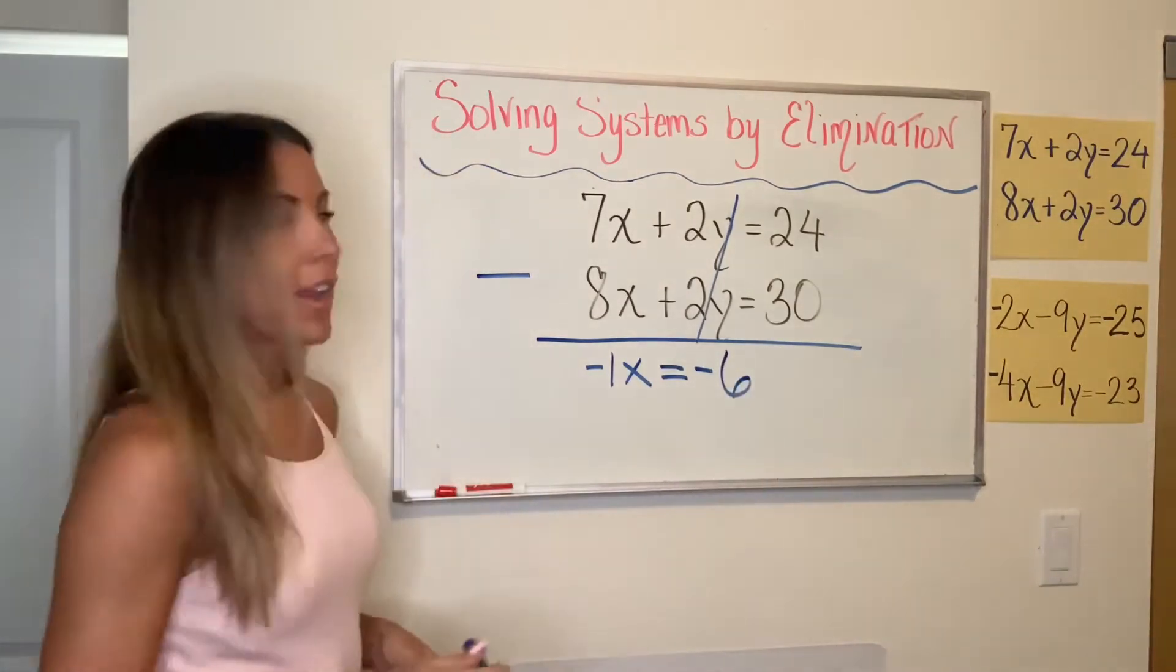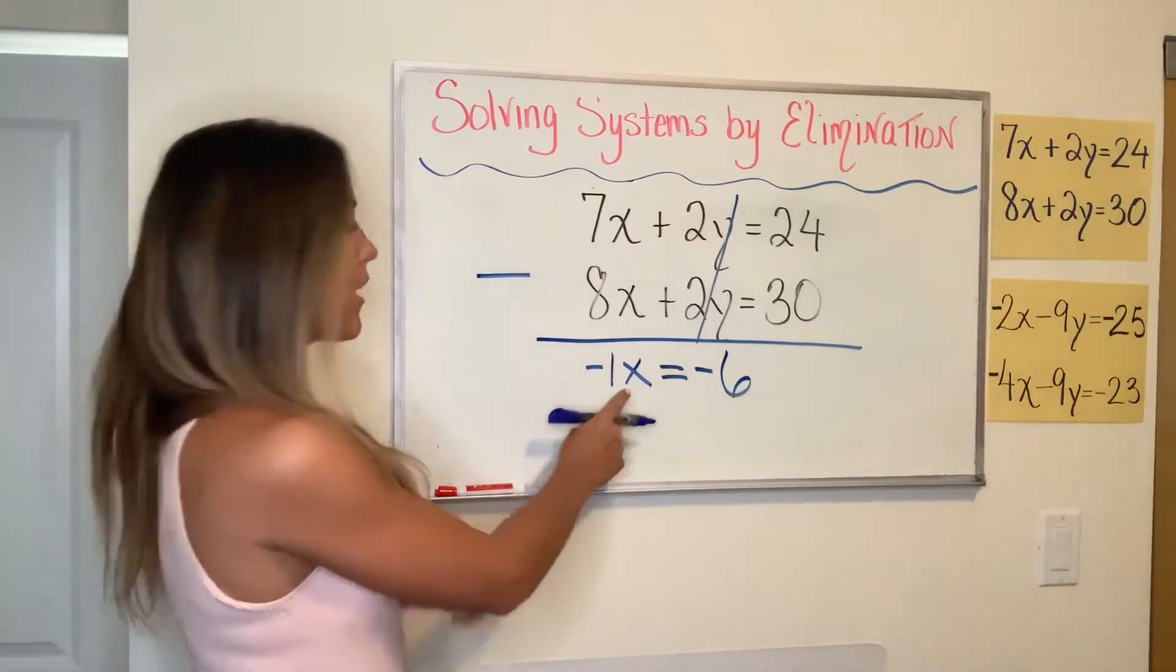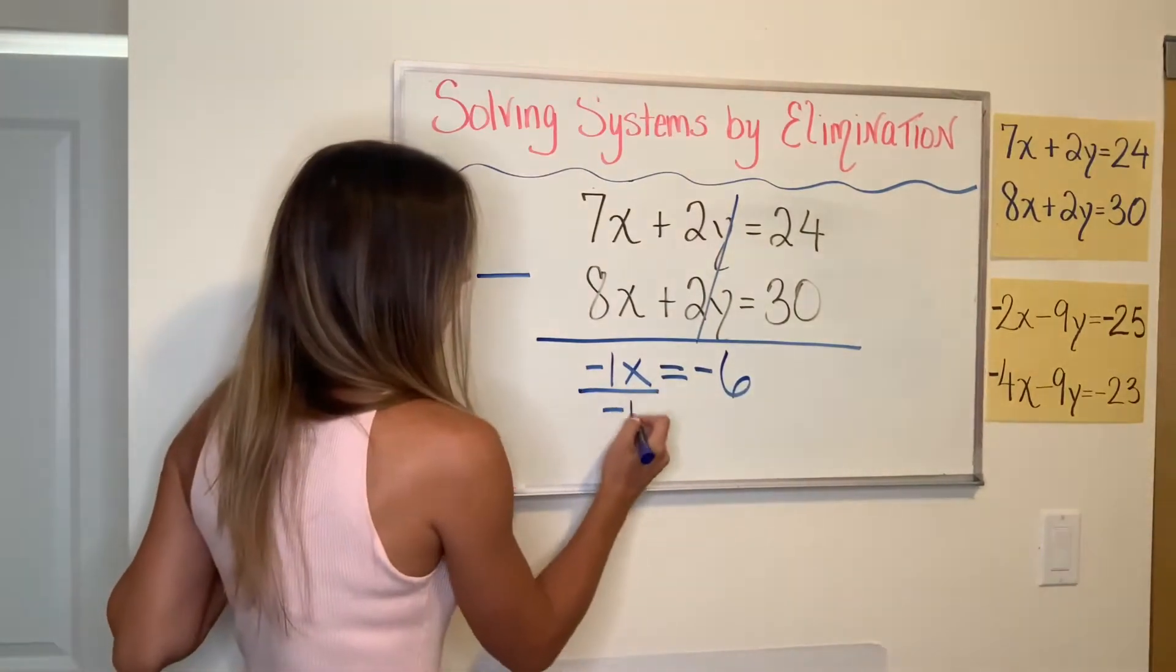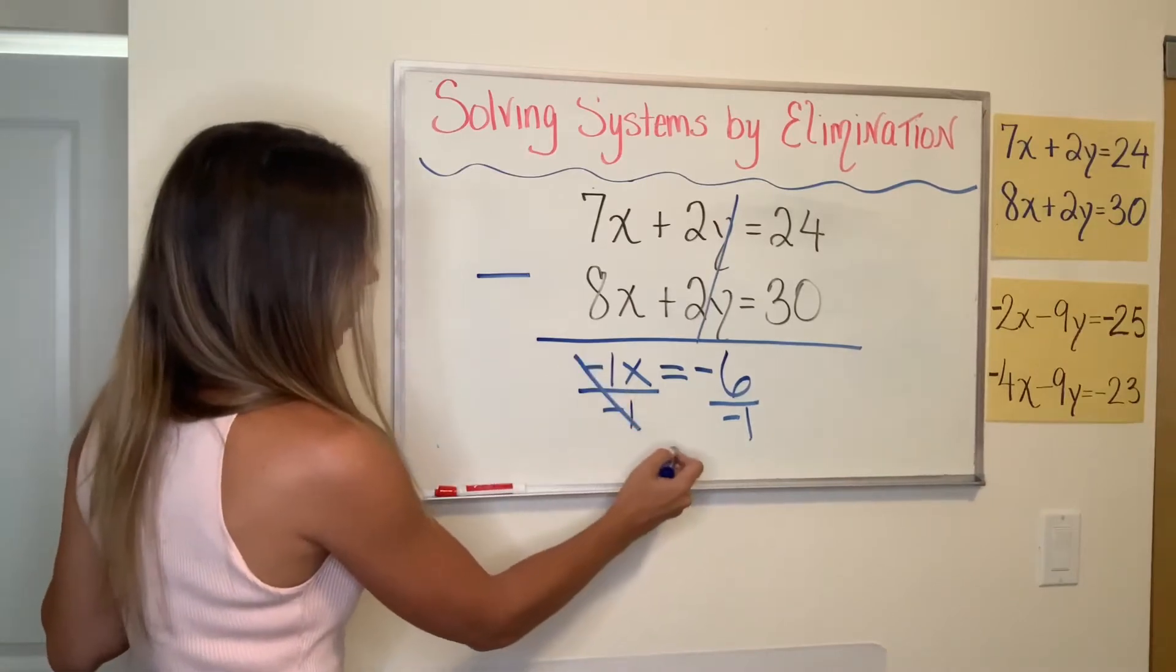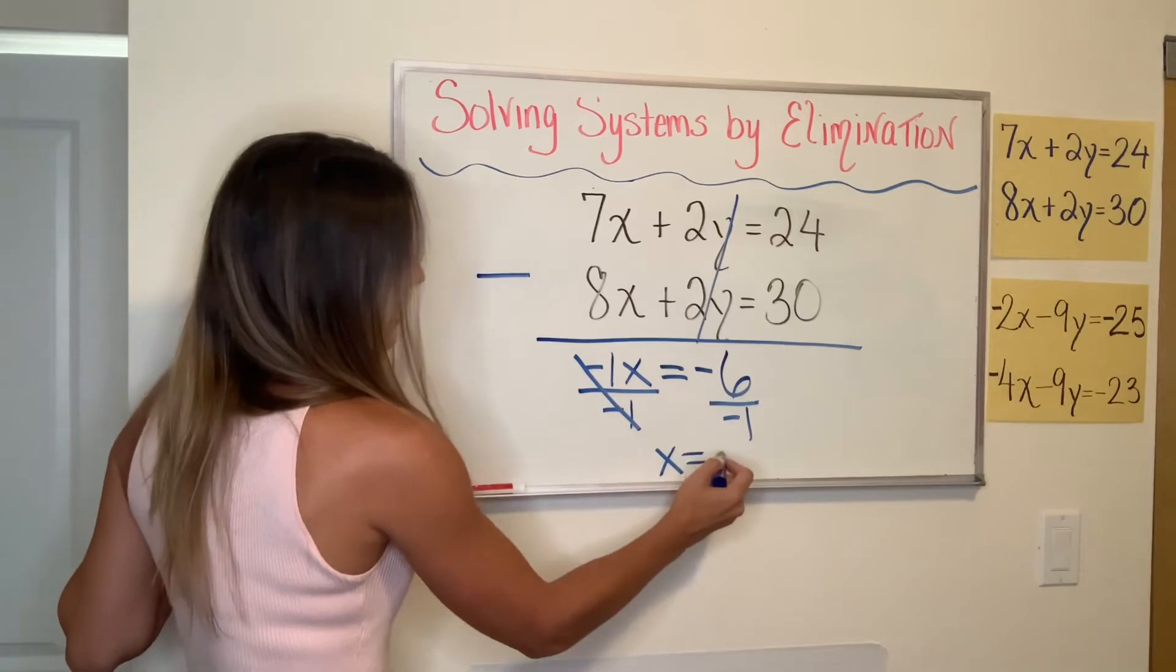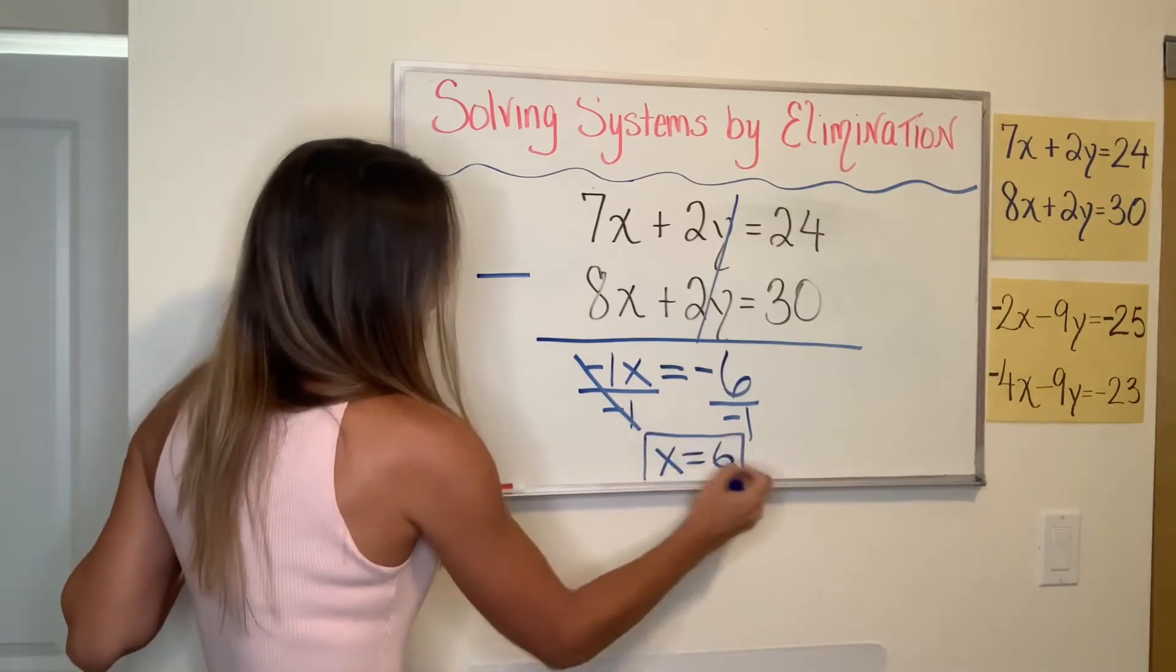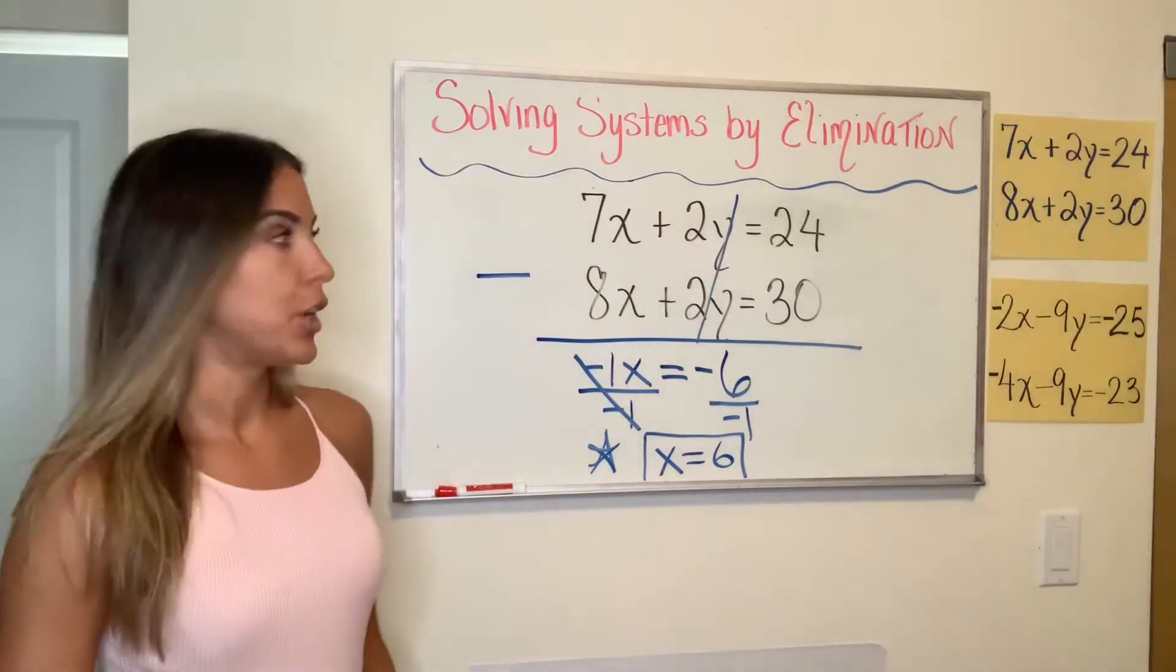And now I'm back in that nice space of a one-step equation where all I want to do is get rid of the coefficient of X. And I will do that by dividing by negative one on both sides. Negative one divided by negative one cancels out because it's 1X equals, on the right side, negative six divided by negative one is positive six. And there we go, I already have my X value for the solution here.